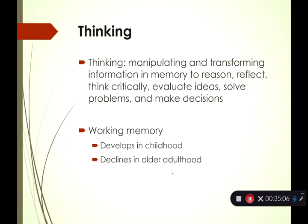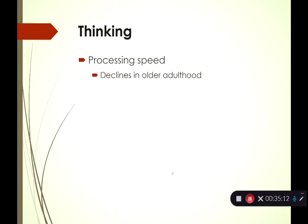Processing speed — how quickly you can think, evaluate information, or make decisions — definitely declines in older adulthood. It takes longer to make a decision or figure out the right choice. That longer time may sometimes result in a really good answer, but it still takes longer for older adults to process information and make decisions.